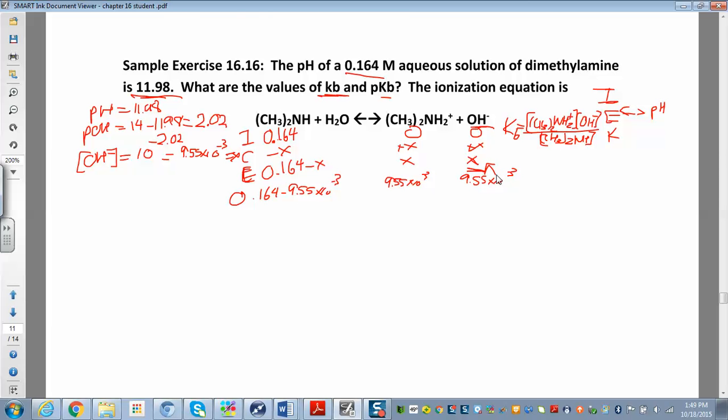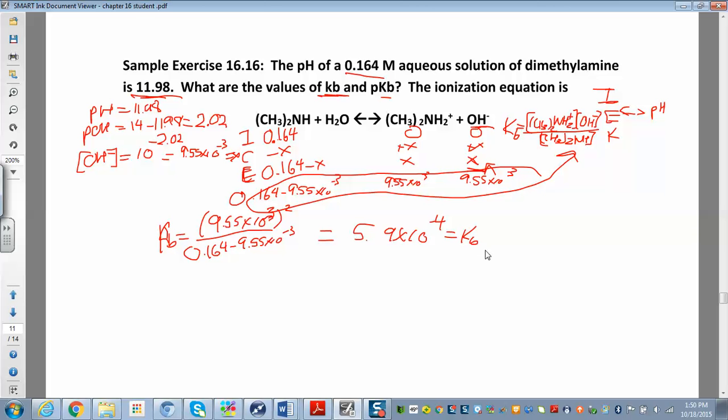So I'm going to take all that and plug that into our equilibrium constant expression. So here I have Kb. Kb is just equal to 9.55 times 10 to the negative 3 squared, right? Because it's this times this, divided by 0.164 minus 9.55 times 10 to the negative 3. And when you work all that out, you get 5.9 times 10 to the negative 4. And that's what Kb is equal to.